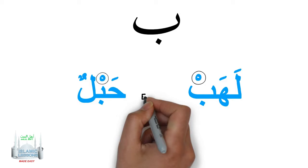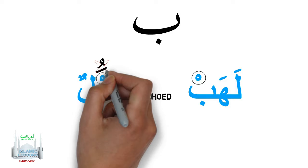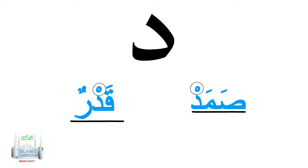It reads 'Lahab,' and this reads 'Habalun.' I didn't say 'Haba' with a fatha or 'Habu' with a dhamma. I said 'Habb' with a slight echo. The letter Ba has a sukoon and is echoed.